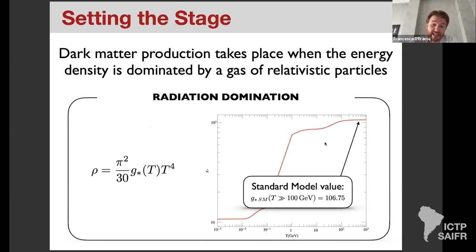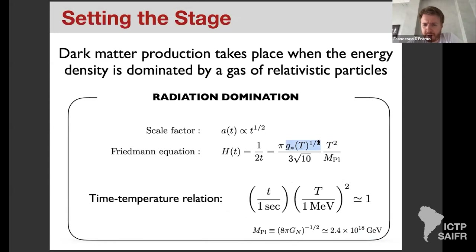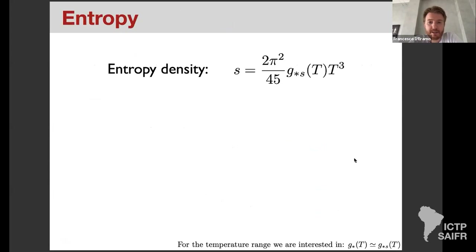The g★ dependence ranges from 10 to 100 in the Standard Model, changing by at most a factor of 10, while T and time range over a much wider interval. Neglecting g★ dependence gives a useful approximate relation: one second corresponds to one MeV. The scaling is that t × T² = constant, with the overall scale set by the BBN numbers — one second and one MeV.